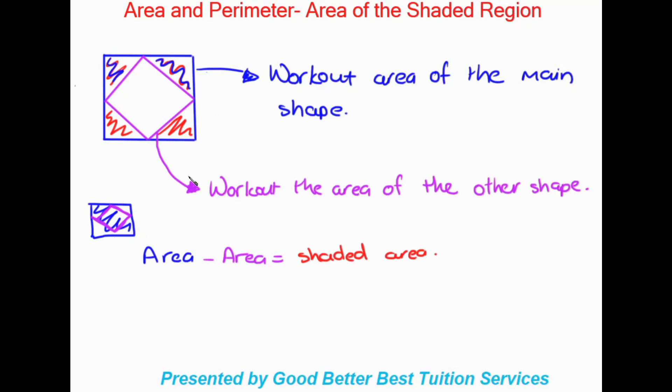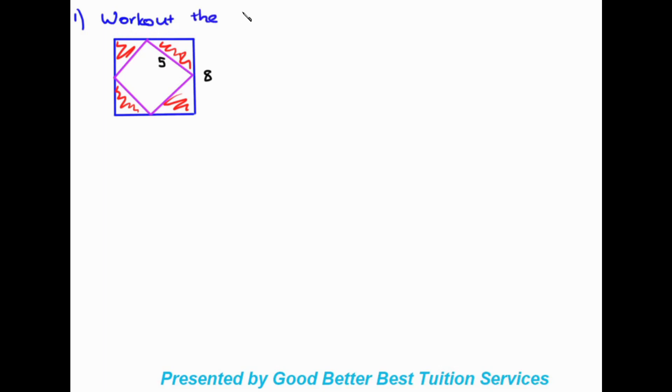So to recap: we're working out the area of the main shape, working out the area of the other shape, and then minusing the two to find the shaded area — because that's the area that is left over. Moving on, we're going to do some actual calculations. What they'd typically ask you is to work out the shaded area, or the size of the shaded area, or the area of the shaded region.